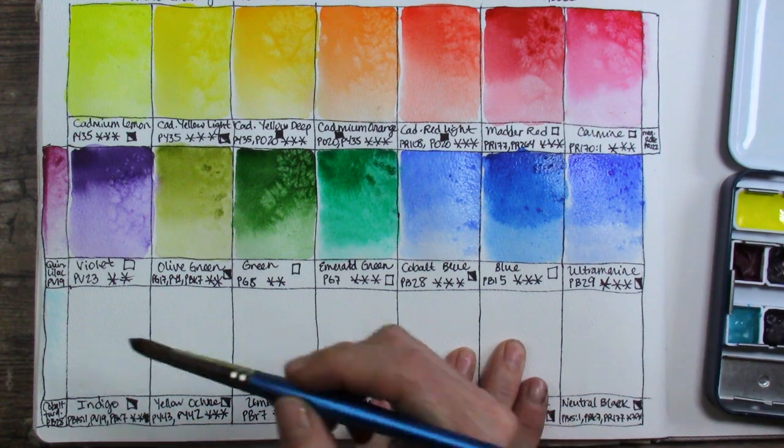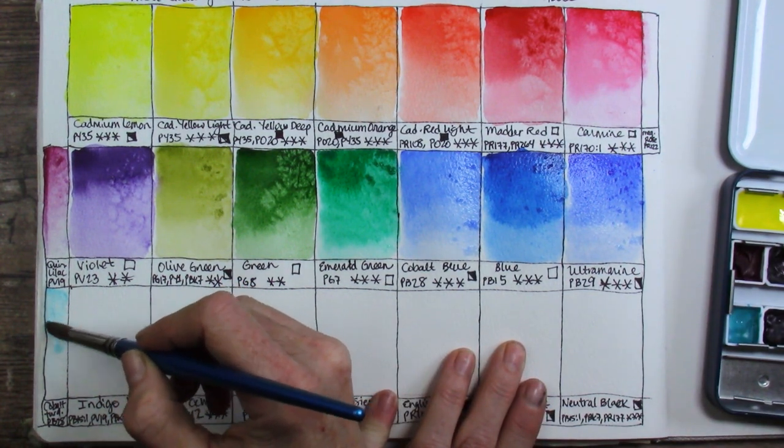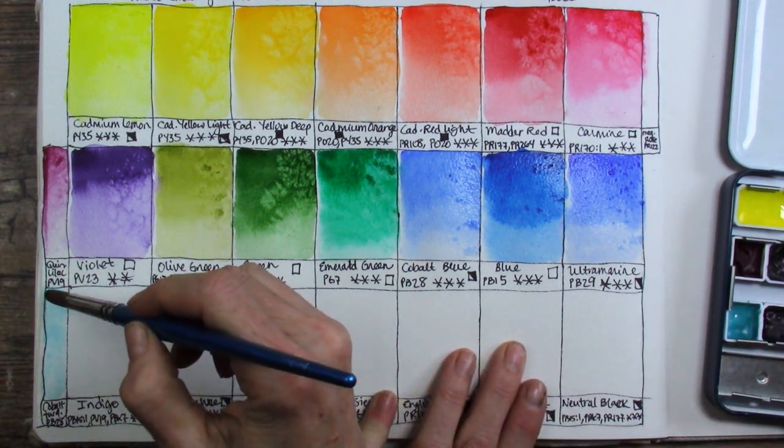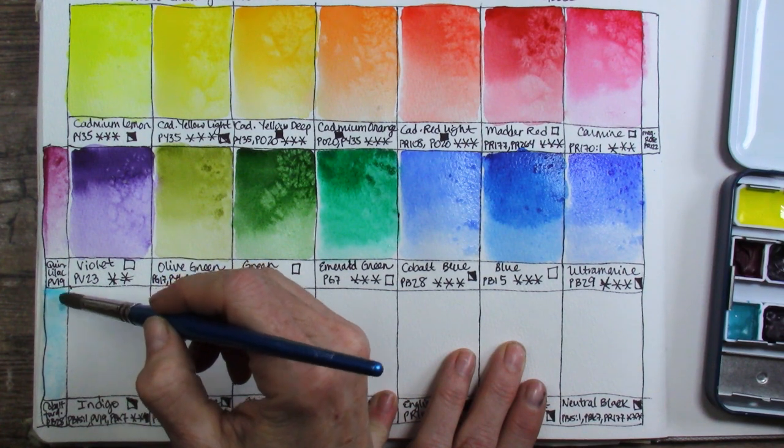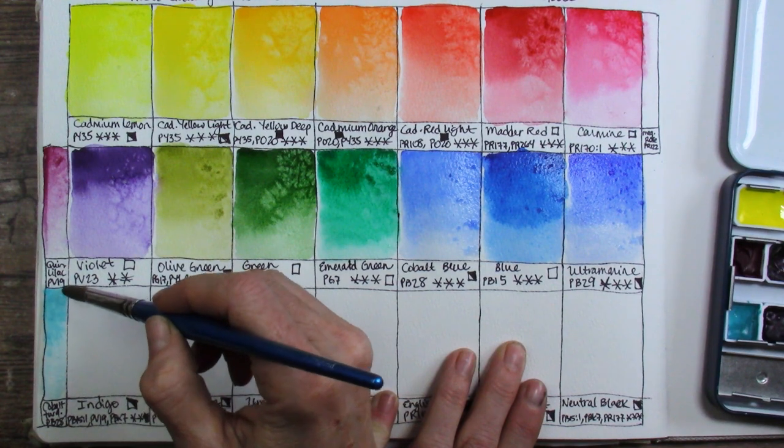Cobalt turquoise PB28. I always love this color. It's hard to get a good color payout with it. It takes some effort so putting water in that one ahead of time as well and massaging your brush into it will really help. But once you get that color off just gorgeous for lake scenes and whatnot.